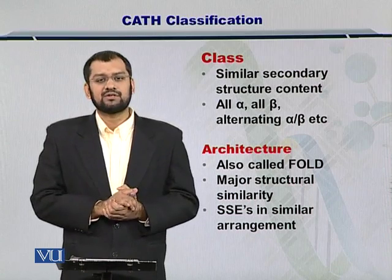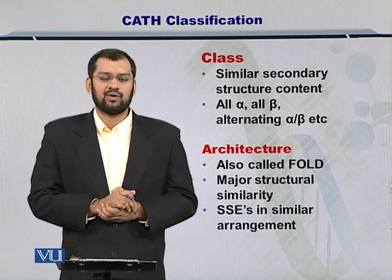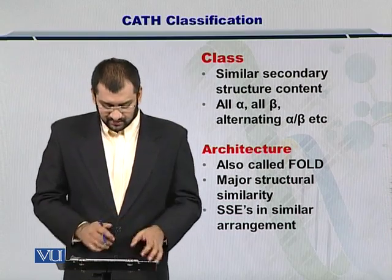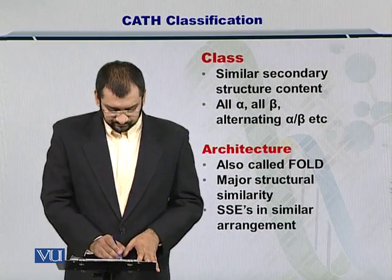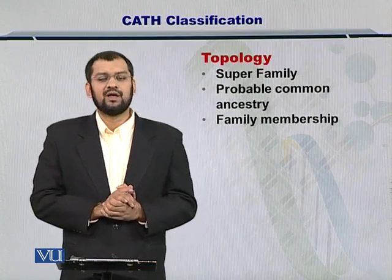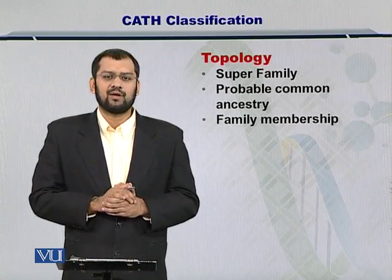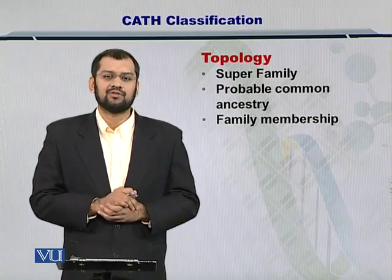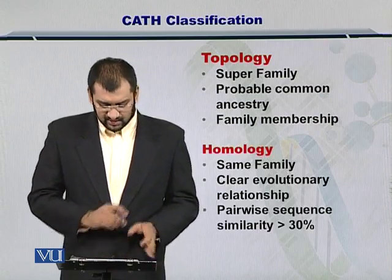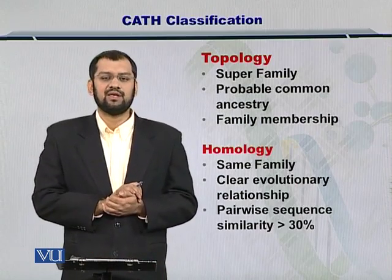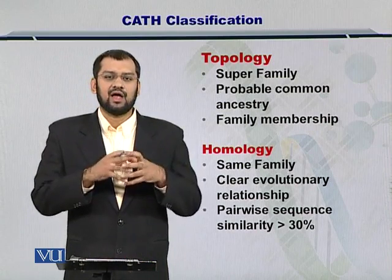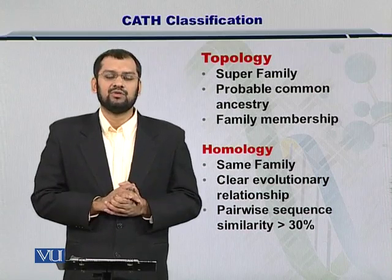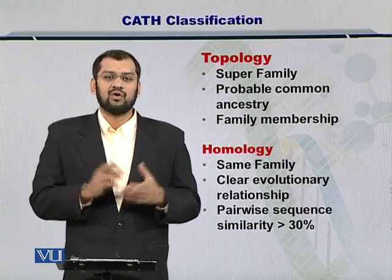The architectures are also called folds, which are very important when looking at protein structures and studying their evolution. You also have the topology, which talks about the superfamily — and most probably, if two proteins share the same topology, they have the same origin. And lastly, homology, which essentially means the proteins are absolutely similar in at least certain functions, and for that you need to have sequence alignment over 30 percent.